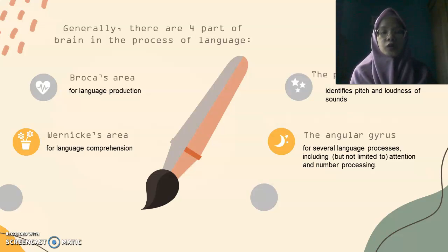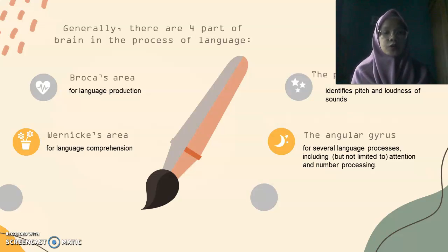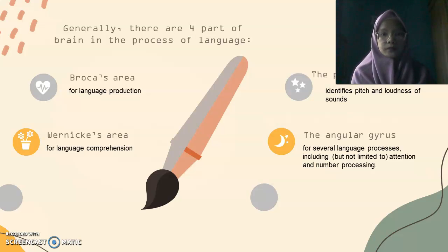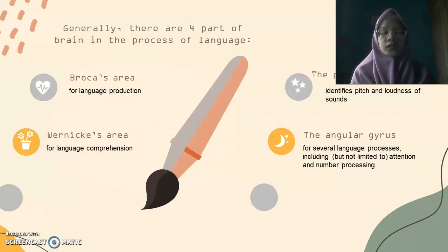Besides that, Broca's area also works in conjunction with working memory to allow a person to use verbal expression or spoken language. So when we want to speak, the part of the brain that runs with it is Broca's area in the frontal lobe. When something goes wrong with Broca's area, that person is injured — or we can call it expressive aphasia.